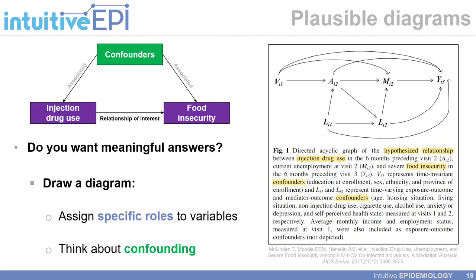So what do they mean by plausible diagrams? The question you should ask yourself is: do you want a meaningful answer from your epidemiologic study when examining the relationship between a given variable and an outcome? The first step is to simply draw a diagram, which can be very simple or more complicated. In that diagram, assign specific roles to your independent variables, and through that process, give a lot of thought to the bias that could be introduced due to confounding factors that could be opening backdoor paths in your conceptual framework.